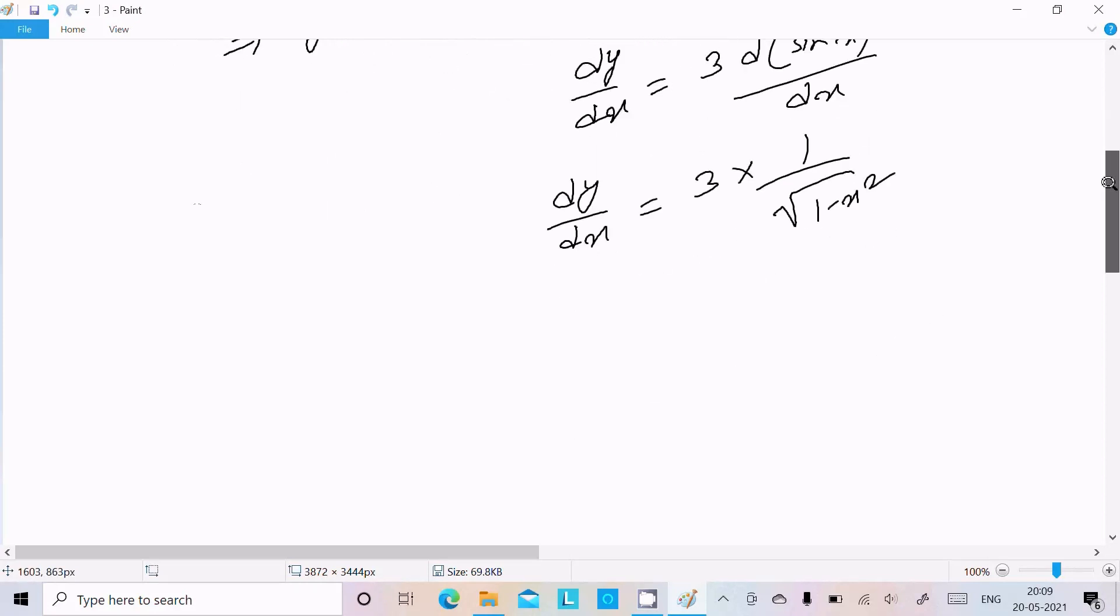Or we can write dy/dx = 3 divided by root under 1 minus x squared. So this is our answer.